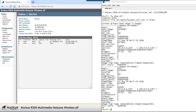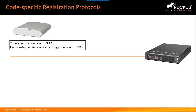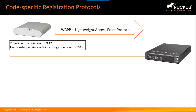Now that we've established the current firmware, let's talk about firmware variants you might encounter. If an AP was managed by a Zone Director with code prior to the 9.12 release, or if it's a factory-shipped AP using code prior to the 104.x release, those APs will use the Lightweight Access Point Protocol (LWAP) to try to register with the SmartZone network controller — a different protocol than APs running later code.